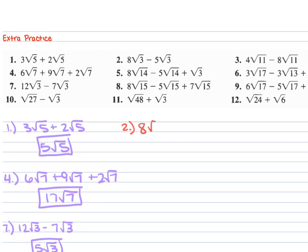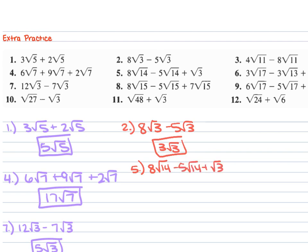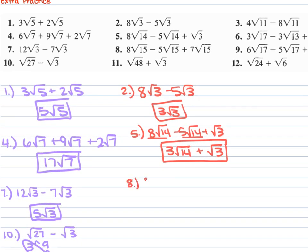Problem 2: 8 square root of 3 minus 5 square root of 3. 8 minus 5 is 3 square root of 3. Problem 5: 8 square root of 14 minus 5 square root of 14 plus square root of 3. 8 minus 5 is 3 square root of 14 plus square root of 3. Problem 8: 8 square root of 15 minus 5 square root of 15 plus 7 square root of 15. 8 minus 5 is 3, plus 7 is 10 square root of 15.